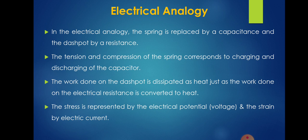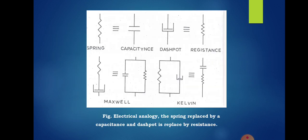Electrical analogy. In the electrical analogy, the spring is replaced by a capacitance and the dashboards by resistance. The tension and compression of the spring corresponds to charging and discharging of the capacitor. The work done on the dashboards is dissipated as heat just as the work done on the electrical resistance is converted to heat. The stress is represented by the electrical potential, that is voltage, and the strain by electric current. This electrical analogy in the best way is explained by this figure. It is exactly opposite to the models represented in the previous slide. That is Maxwell model, Kelvin model, and four elements Berger model. The exact opposite picture can be seen in this electrical analogy of the spring and dashboards.